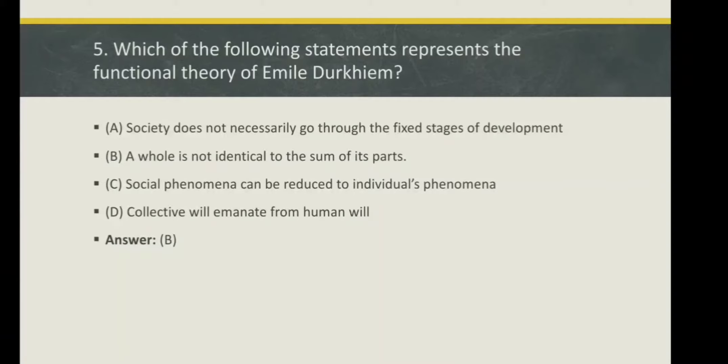A whole is not identical to the sum of its parts. Option C: Social phenomena can be reduced to individual's phenomena. Option D: Collective will emanate from human will.